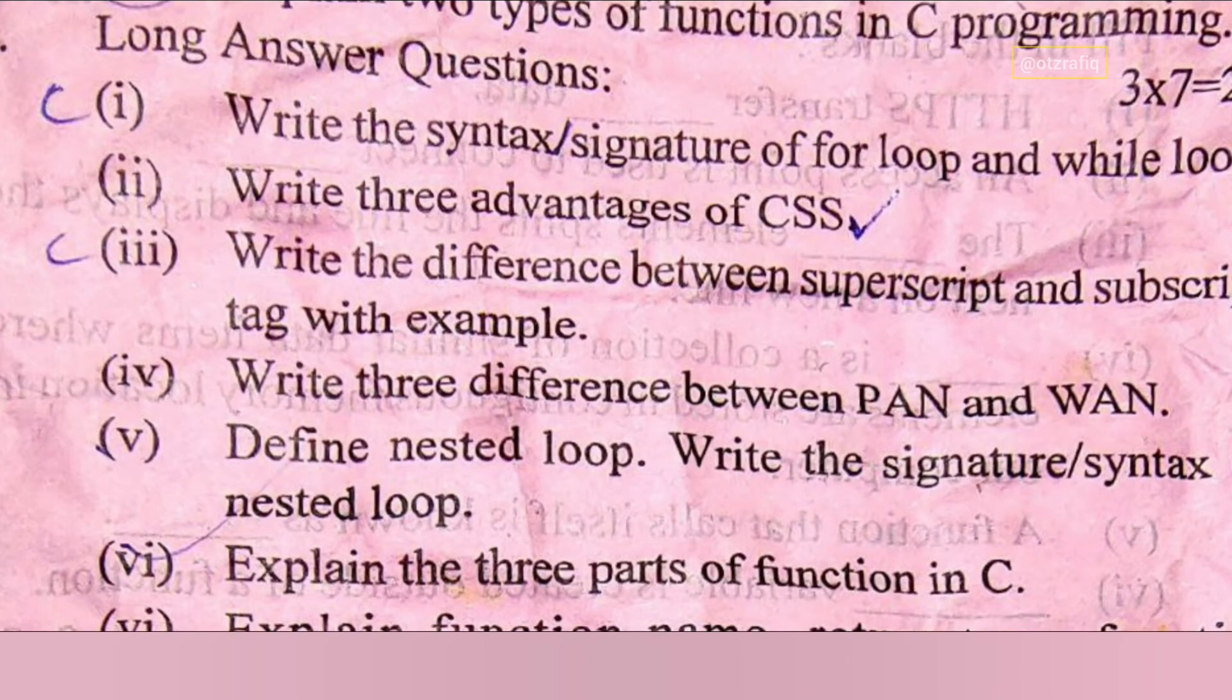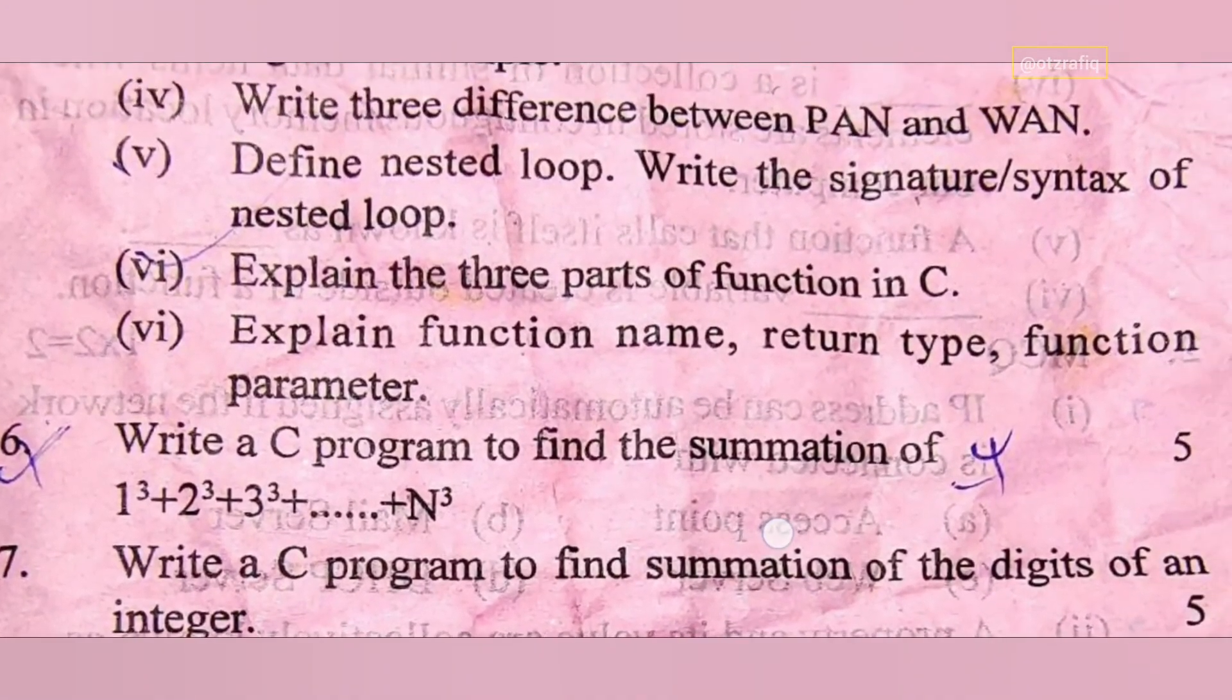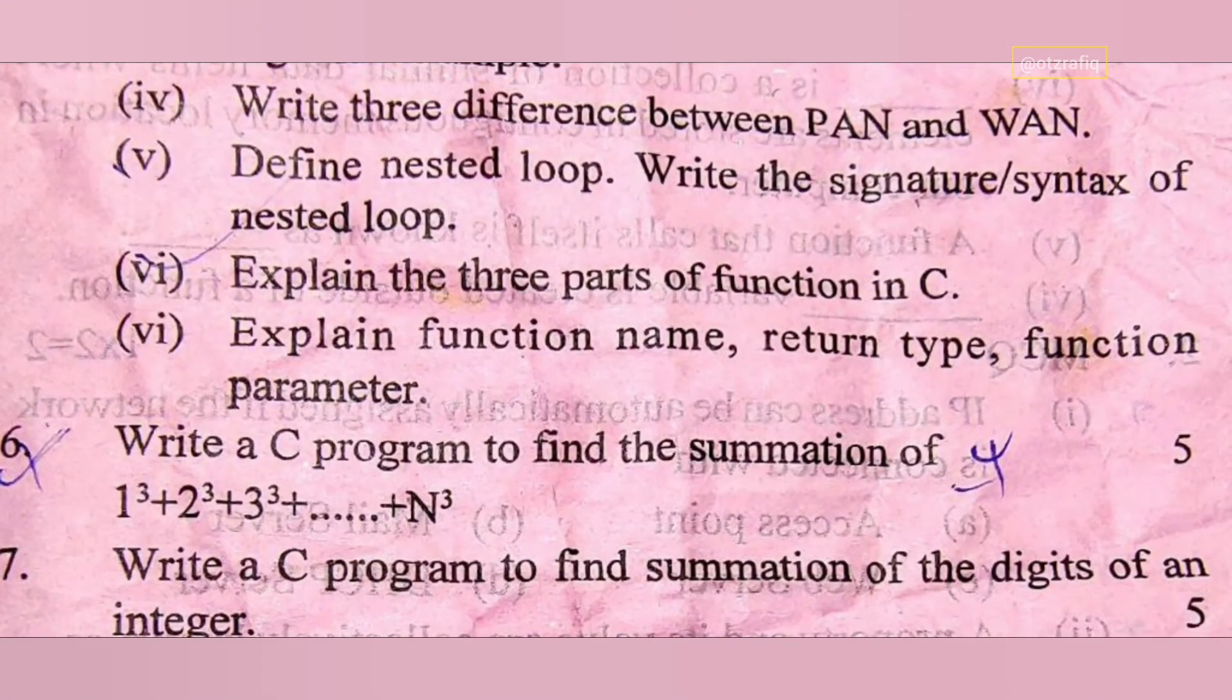Write three differences between PAN and WAN. Next: define nested loop. Loop inside another loop is called nested loop and syntax you can write from there. I'll write on the screen, you can see from there.